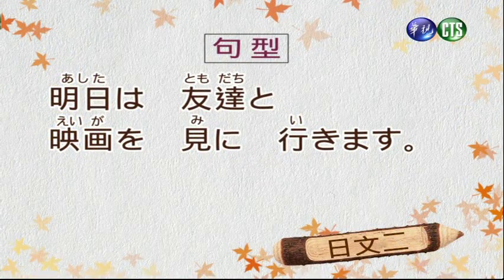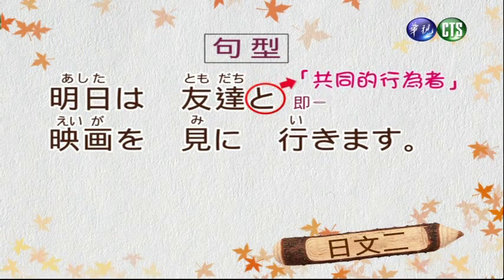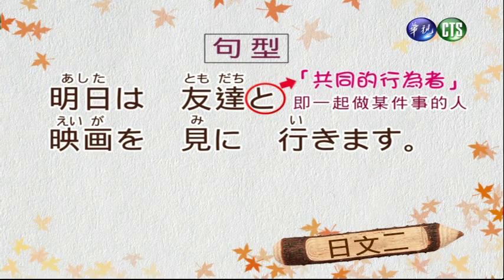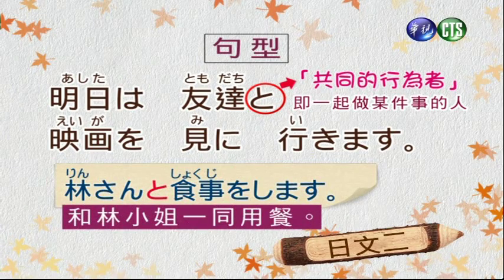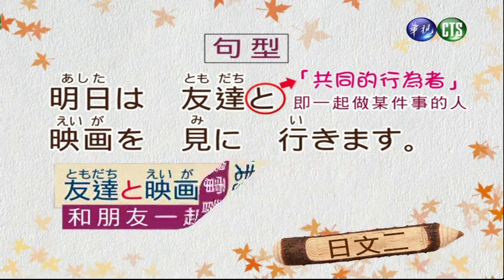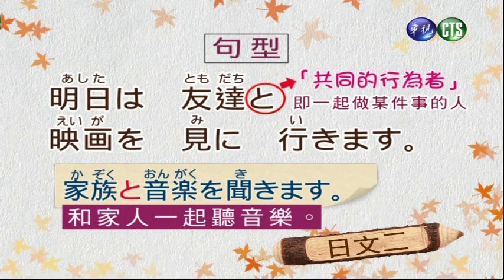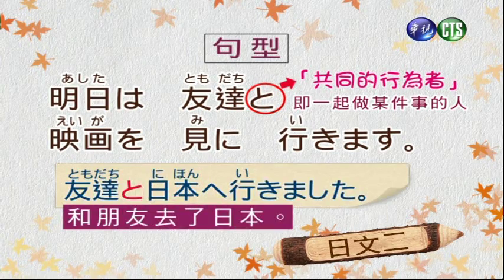這個講次主要學習的項目是動作目的的表達方式。首先看句型一：明明は友達と映画見に行きます。這個と表示共同的行為者，也就是一起做這個事情的人。例如：林さんと食事をします（和林小姐一起用餐）、友達と映画見ます（和朋友一起看電影）、家族と音楽を聞きます（和家人一起聽音樂）、友達と日本へ行きました（和朋友去了日本）。